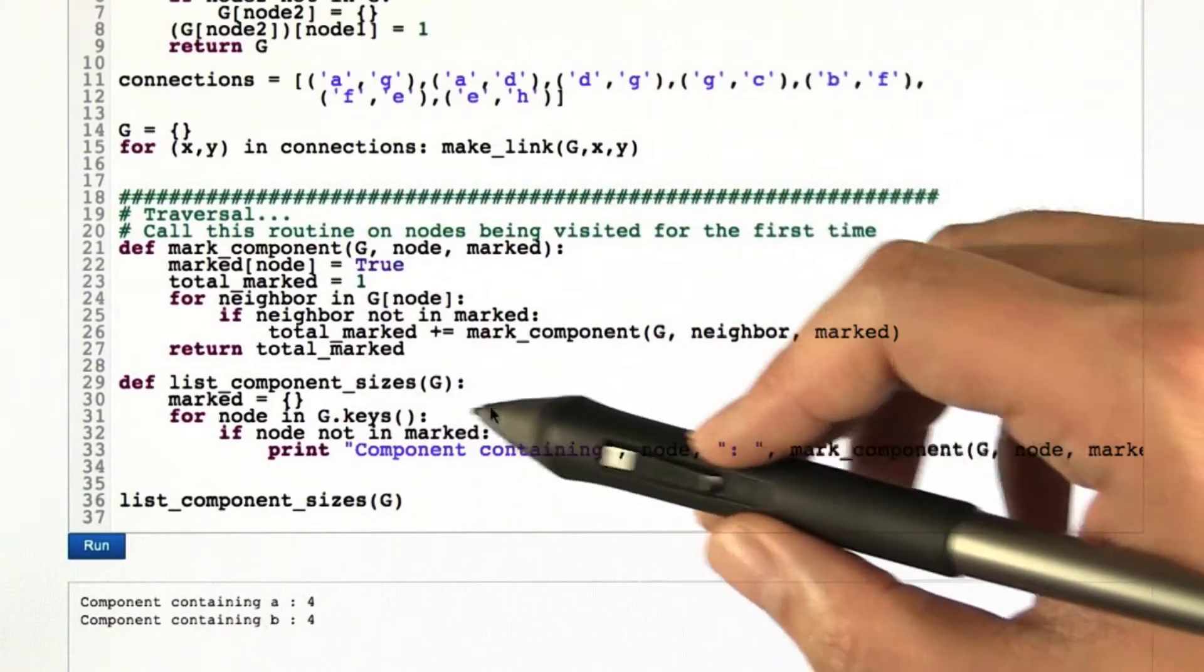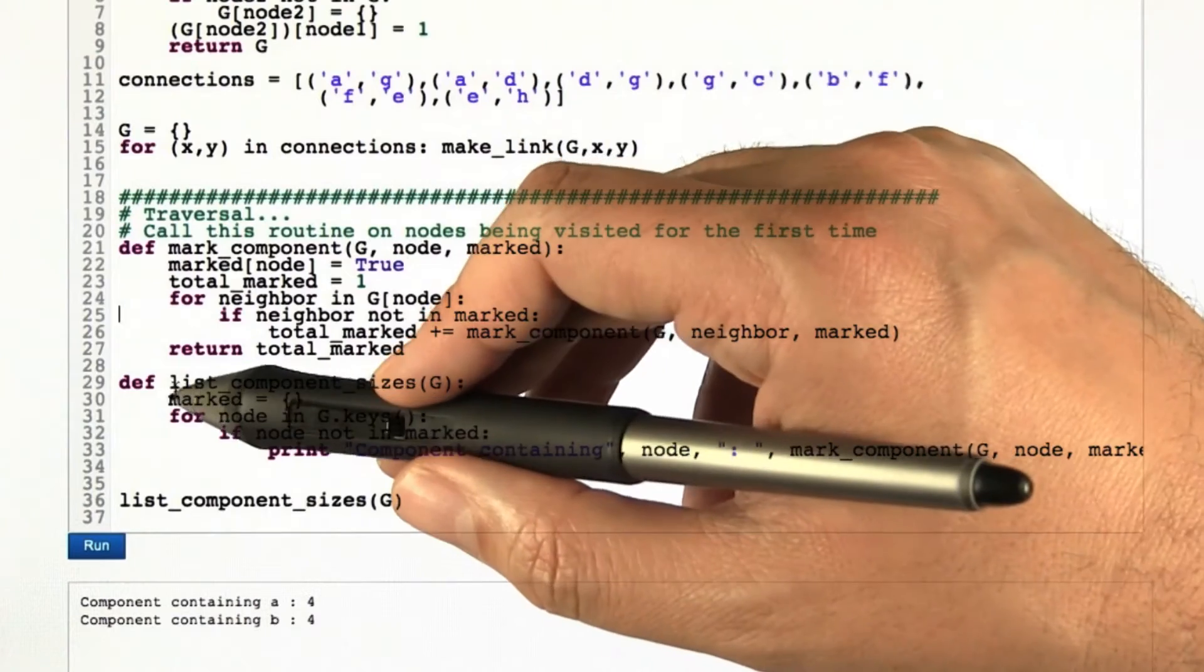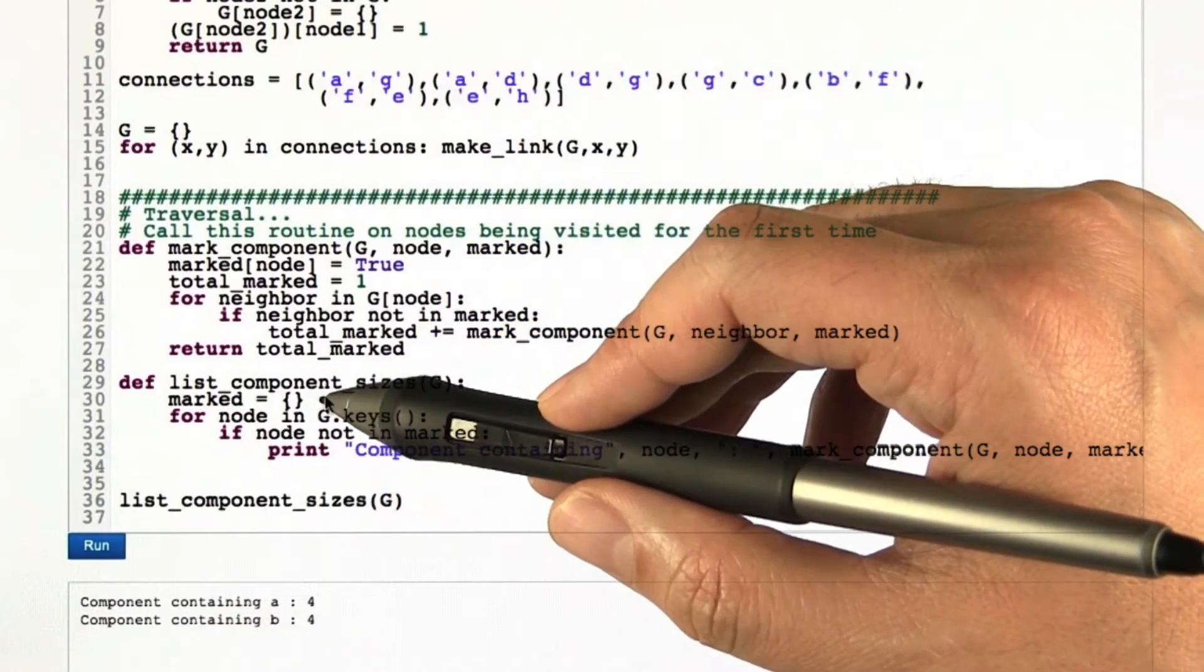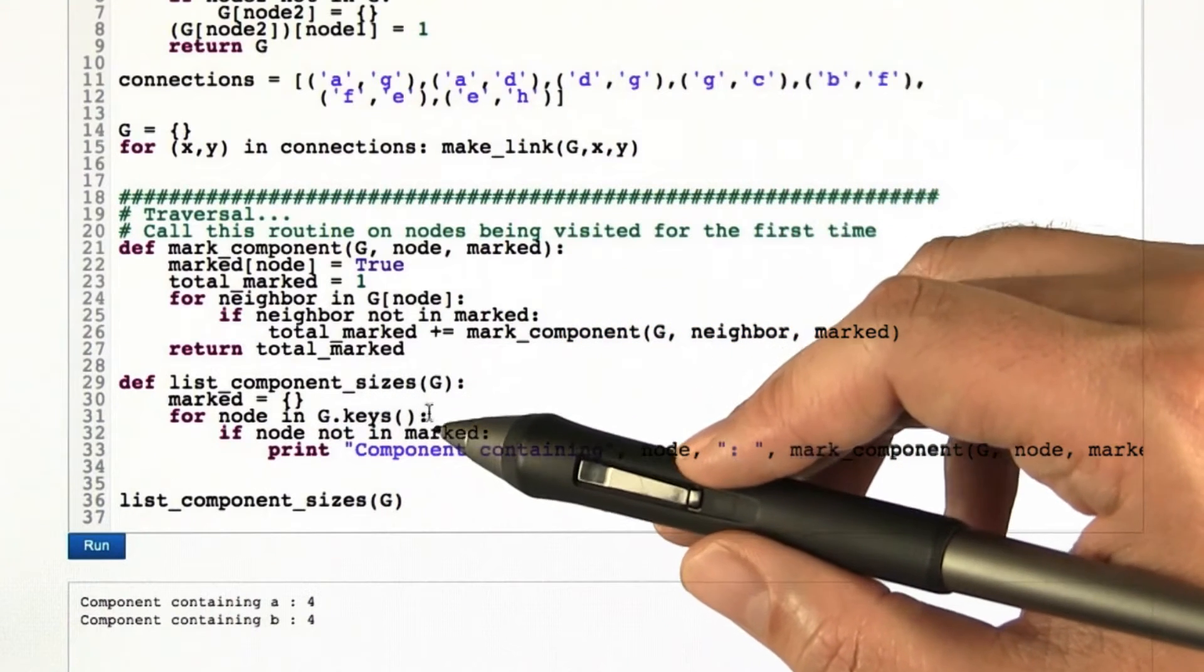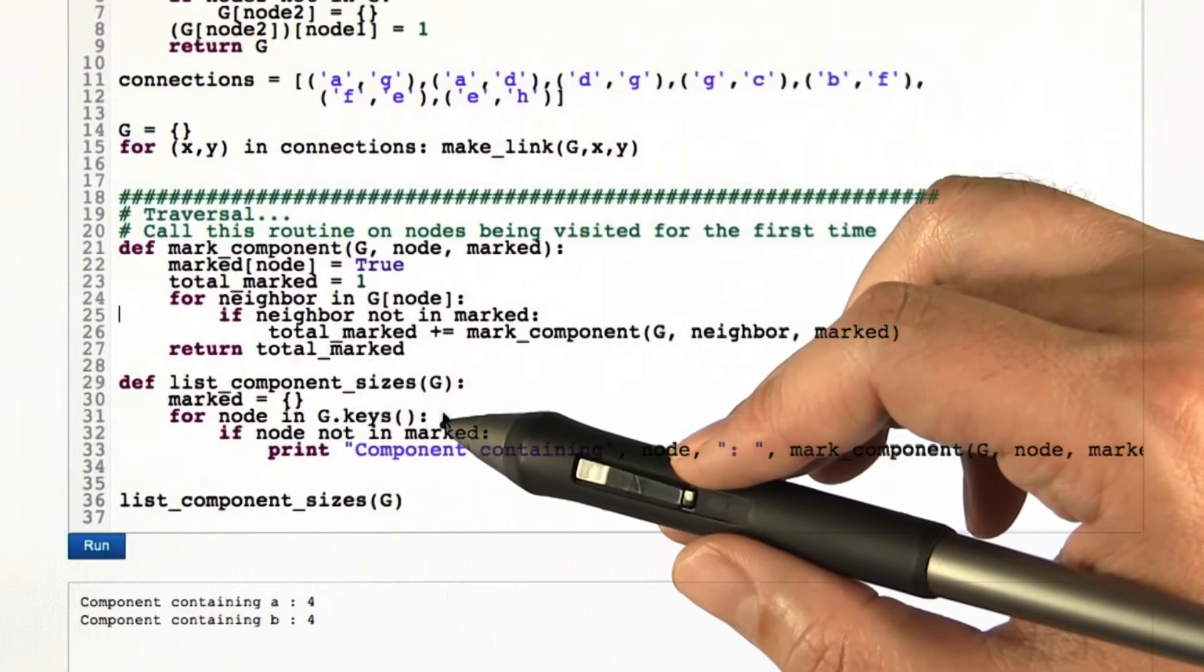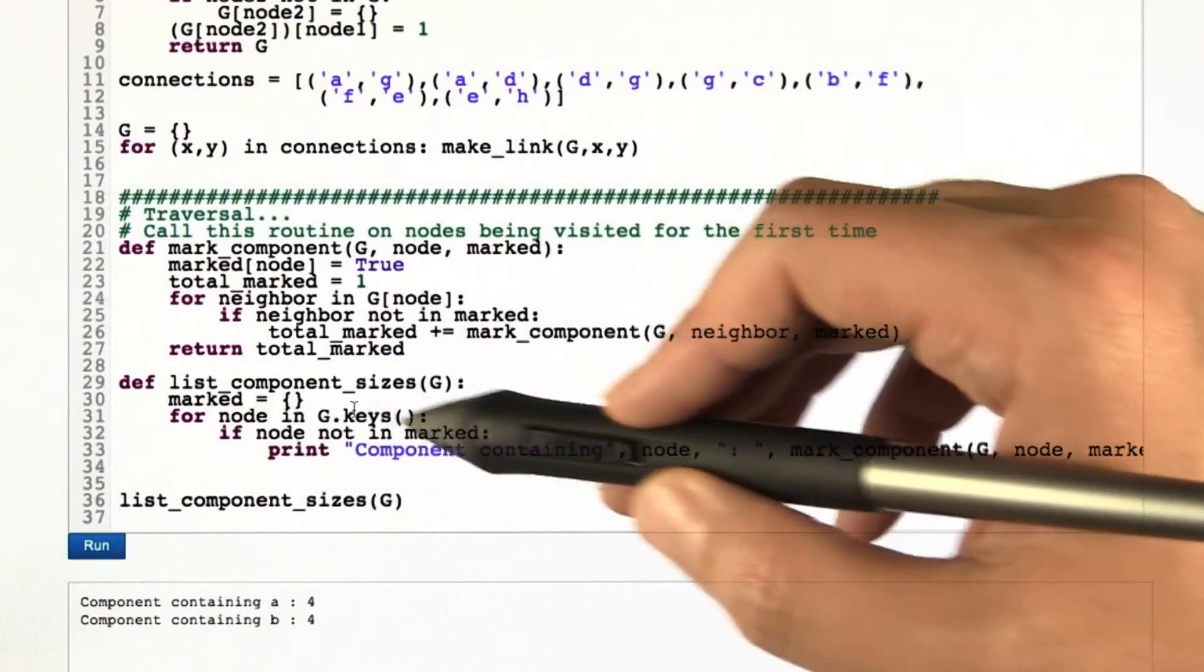There's also a routine on the outside that takes a graph and starts off saying, well, nothing's been marked so far. We just have an empty data structure. Then what we're going to do is we're going to loop through all the nodes in the graph because we don't know which ones are going to be the beginnings of a new component or not.